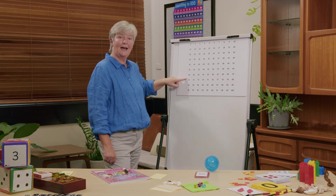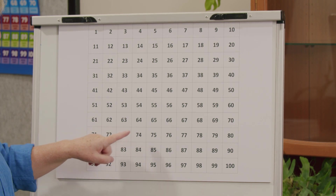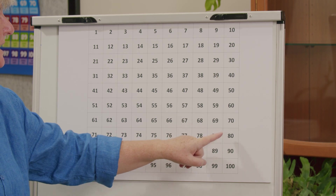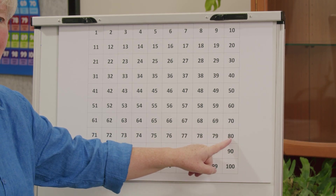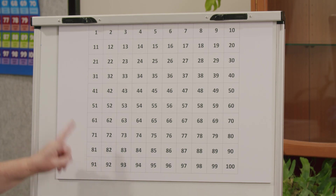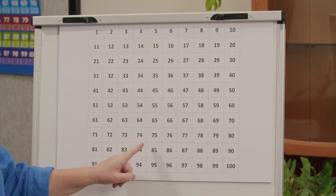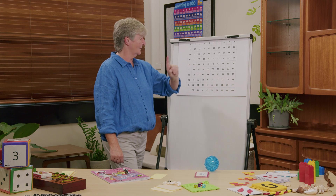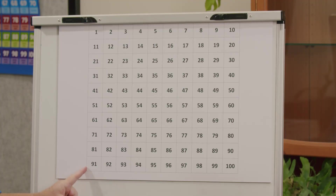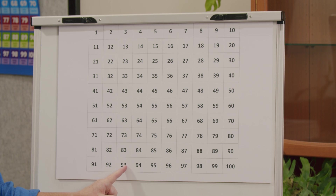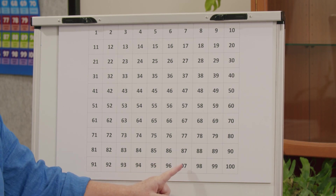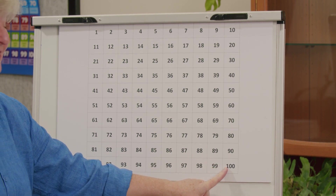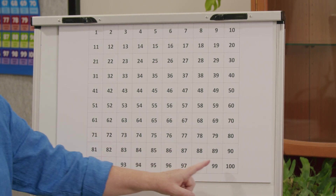Now that we've found 71, we can count onward: 71, 72, 73, 74, 75, 76, 77, 78, 79, 80. What comes after 80? 81, 82, 83, 84, 85, 86, 87, 88, 89, 90. 91, 92, 93, 94, 95, 96, 97, 98, 99, 100. Well done — we counted from 71 to 100.